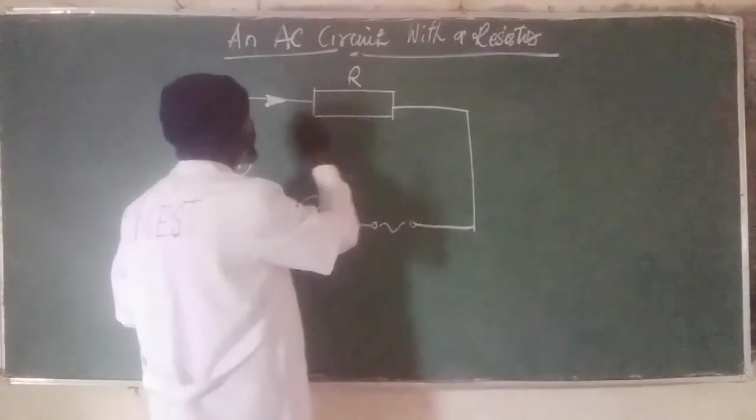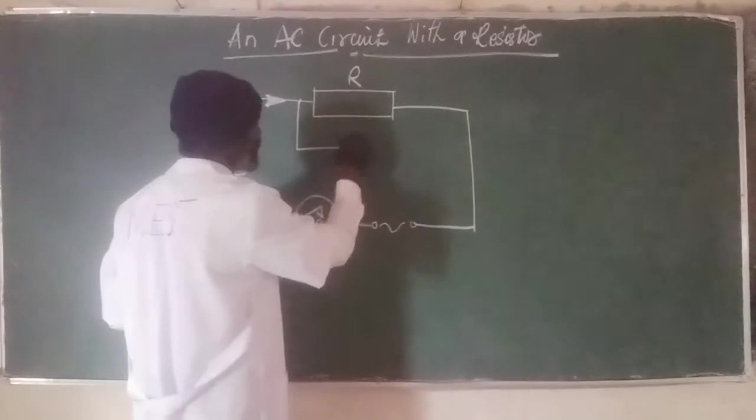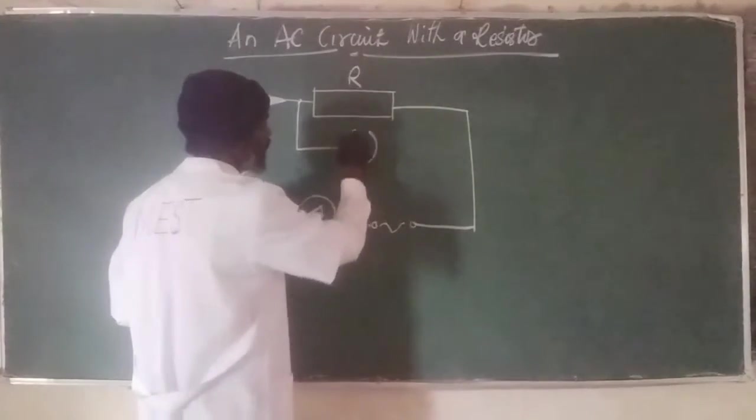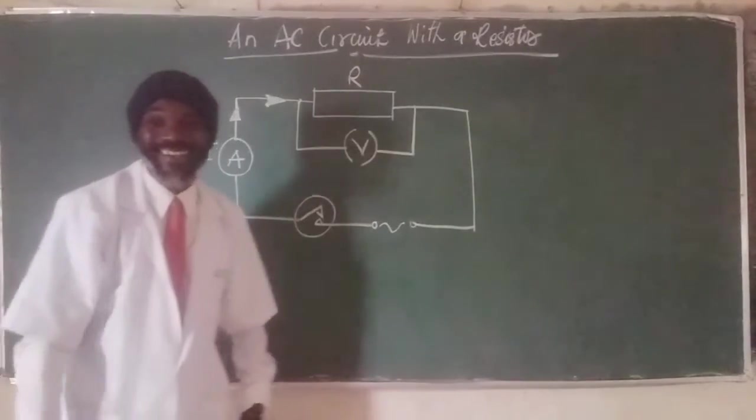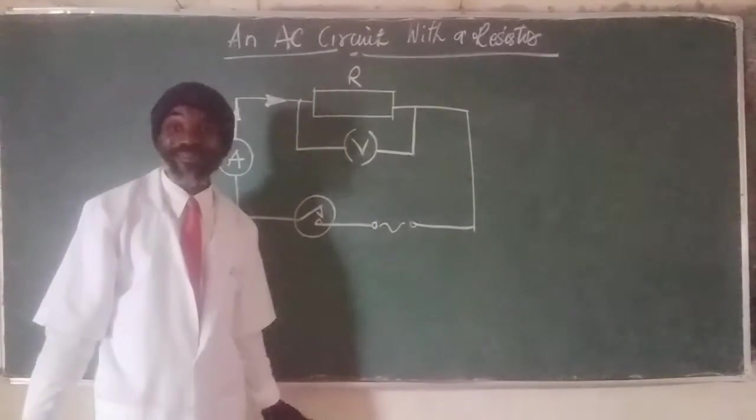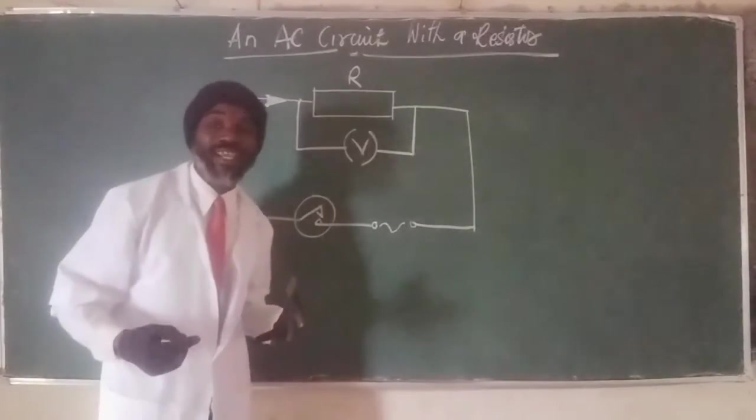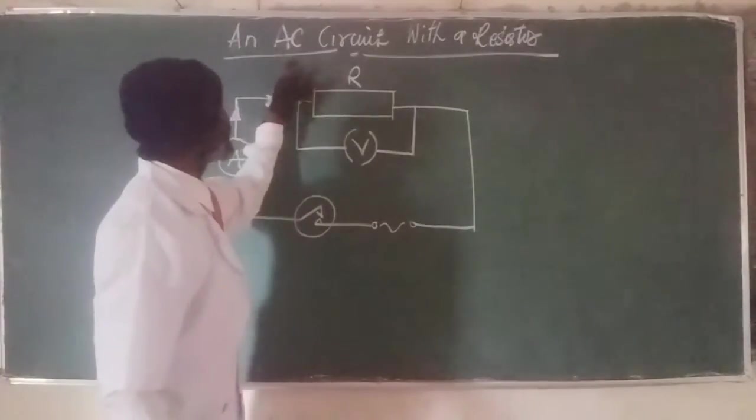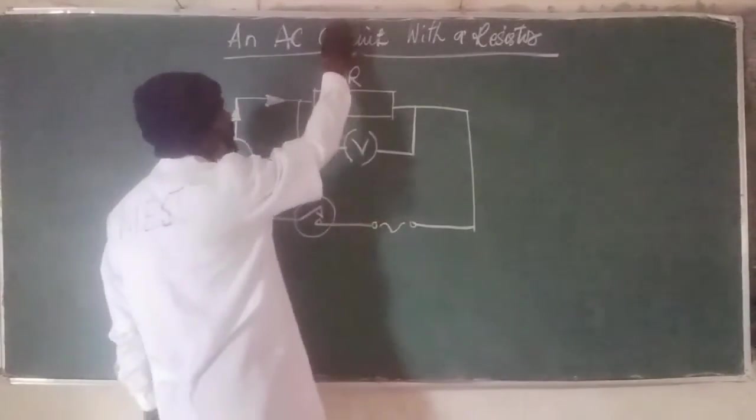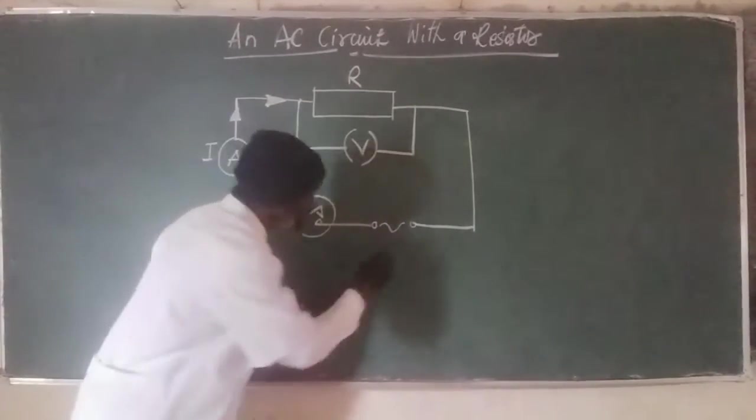But there's something we must understand. We also need to find the potential drop V across the resistor. Now, how do we know or how can we identify these circuits as an AC circuit? Simply by looking at this point. This is an alternating voltage.